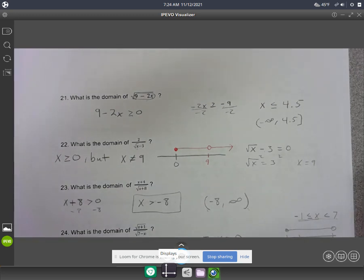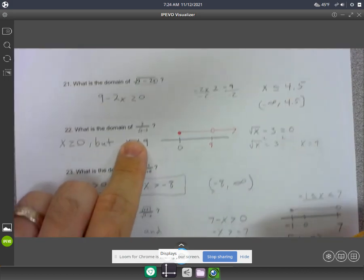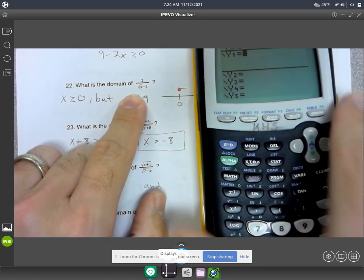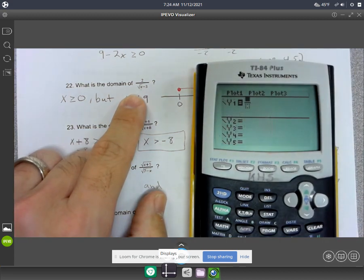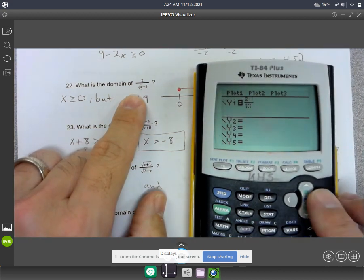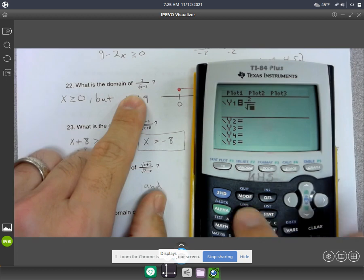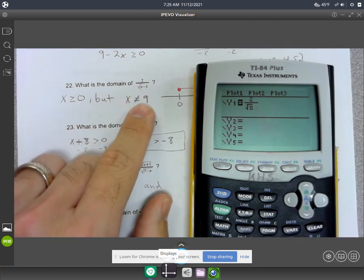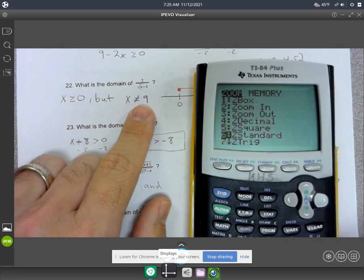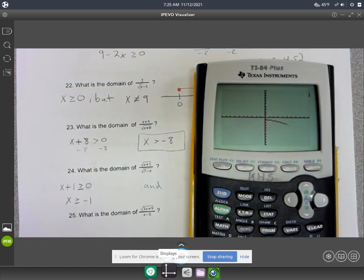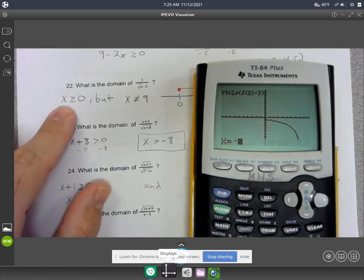Let me try number 22 here. Alpha y equals, I'll do 2 over square root of x minus 3. Zoom standard. All right. So the graph starts at 0. You cannot plug in a negative. Like negative 1, it's not defined.